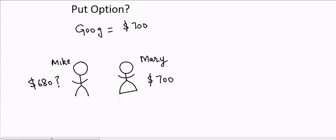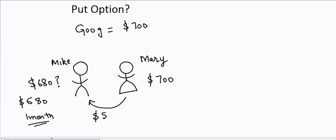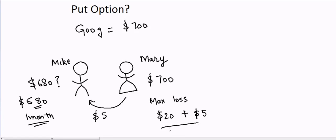In that case, Mary will give Mike five dollars, and for five dollars Mike will promise that he will buy the stock for $680 after one month. So if Mike promises Mary that he will buy the stock even if it goes below $680, then Mary will have downside protection. Her maximum loss will be equal to $20.